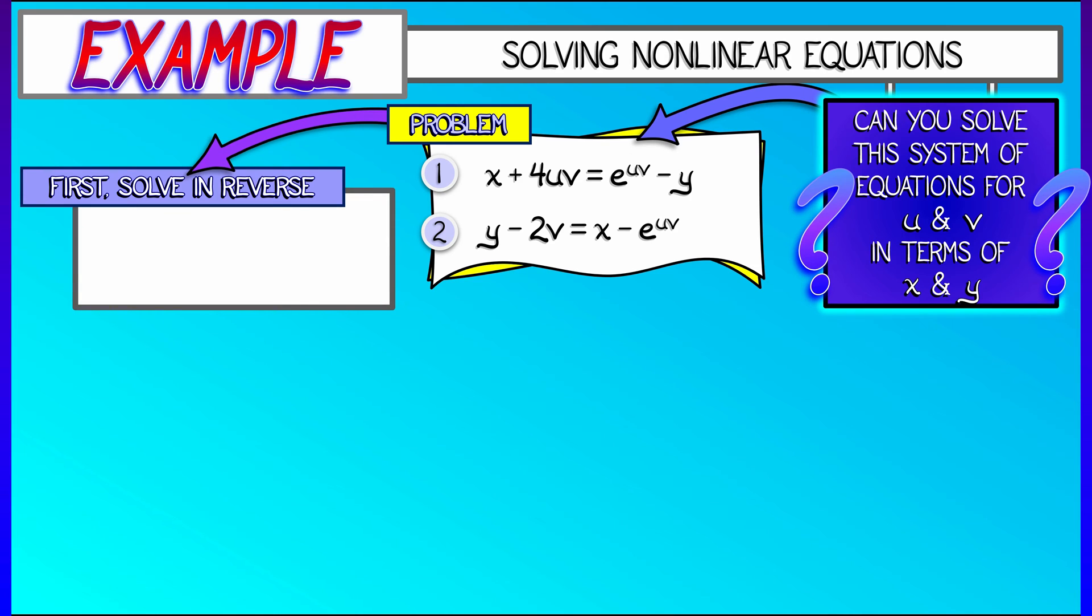But first, let's solve in reverse. It's going to be easier to get x and y by itself. For example, if I add these two equations together, do a little manipulation, I get that 2y equals 2v minus 4 times u times v.